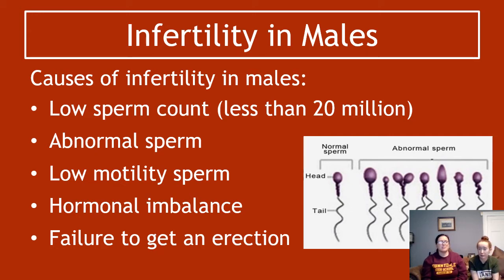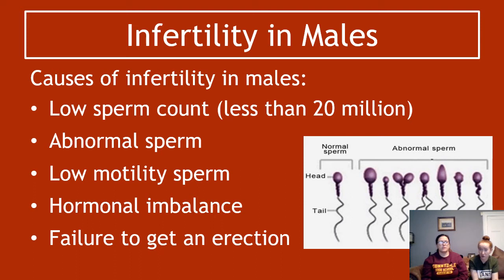Infertility in males has its own causes. The first is a low sperm count — less than 20 million per millilitre is considered low. Abnormal sperm is another cause: too big a head, too small a head, too round a head, too many heads, or problems with the tail. Low motility is also an issue — if sperm are not strong enough swimmers to reach where they need to be, they cannot do their job.